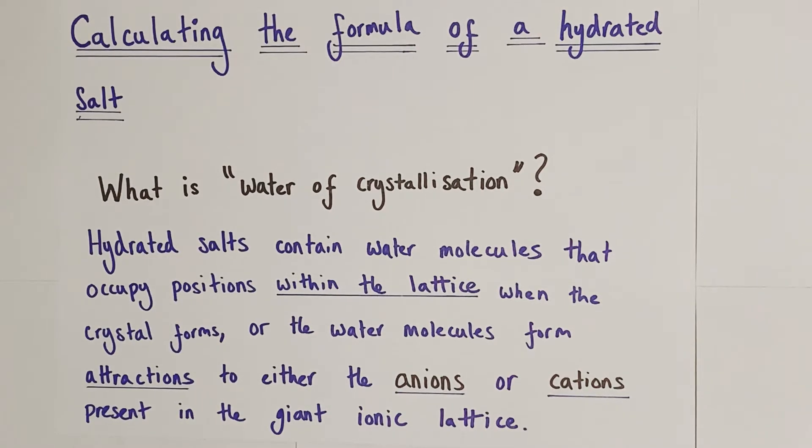Firstly, water molecules can occupy positions within the giant ionic lattice itself when the crystal slowly forms and therefore they're trapped inside the lattice structure.